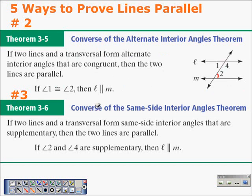We also have the converse of the same side interior angles theorem: if two lines and a transversal form same side interior angles that are supplementary, then the two lines are parallel. From the diagram, if angle 2 and angle 4 are supplementary — that is, their measures add up to 180 degrees — then line L is parallel to line M.